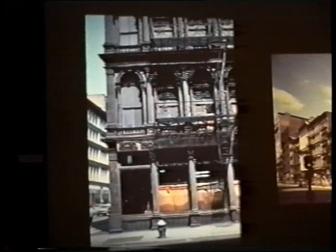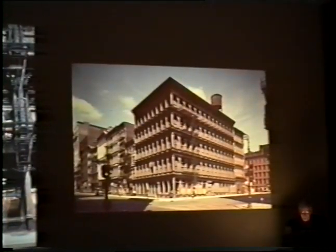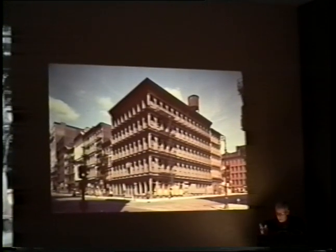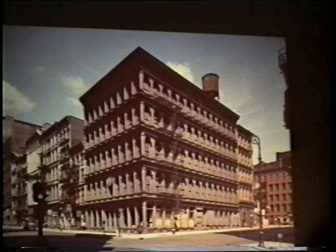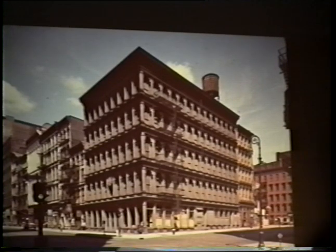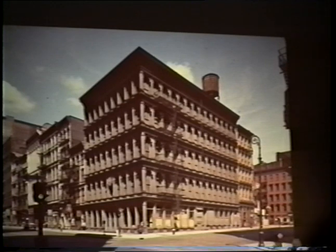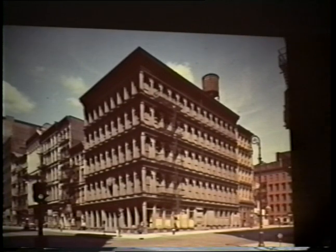Looking at the overall form of the Haughwout Building — five stories, about the limit this iron system could support — it's the beginning of the development of the skyscraper, which we'll see later when steel made much taller structures possible. It's also significant that this building happens to contain the first practical public elevator, invented by Otis — another prerequisite of the skyscraper. As with the balloon frame, new developments in technology — iron and the elevator — make possible the creation of new architectural forms.